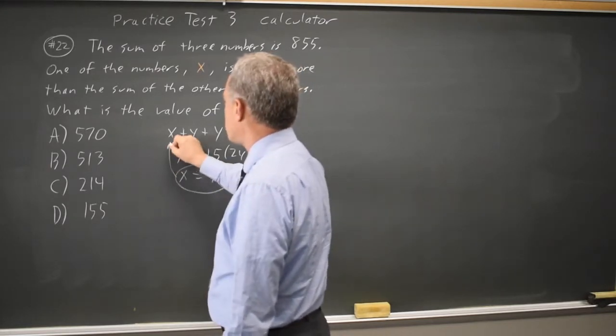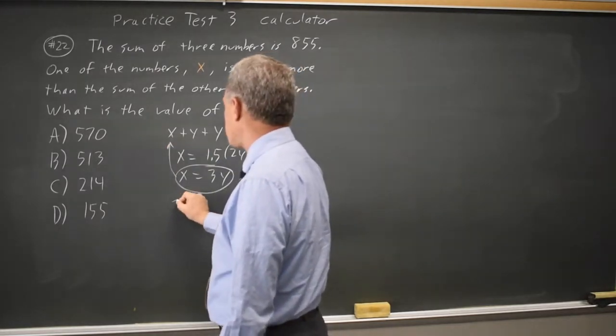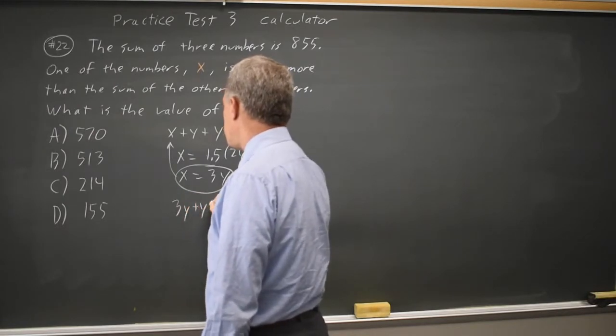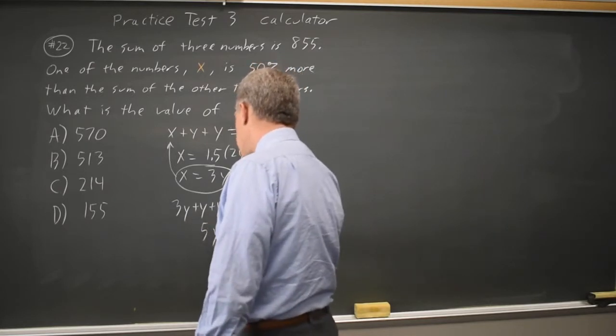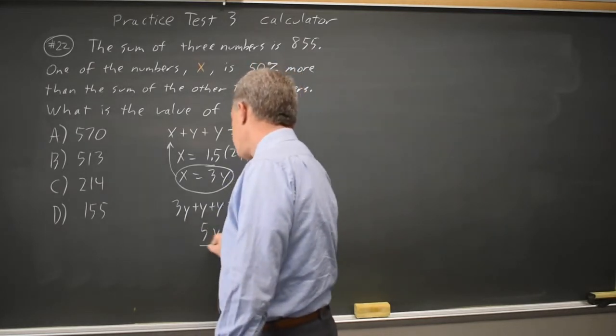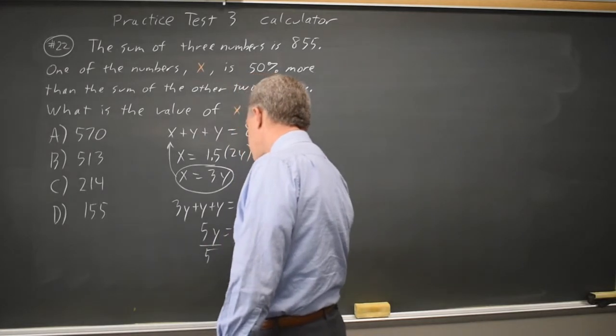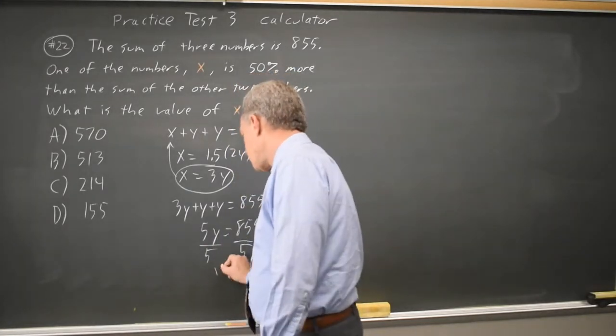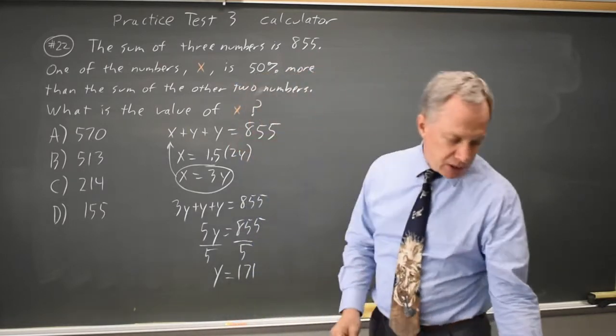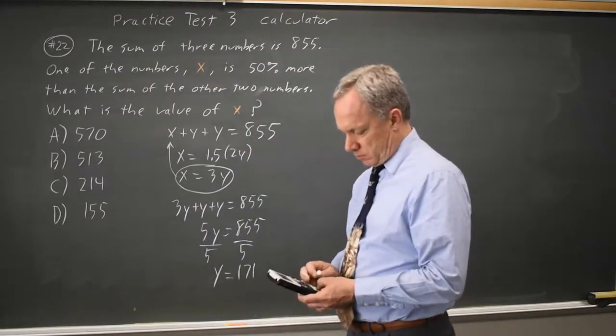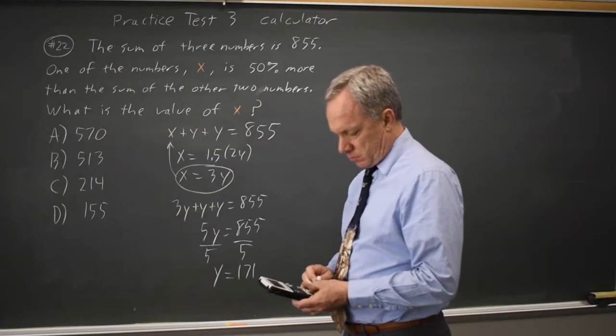Substituting 3y in for x in this first equation I get 3y plus y plus y equals 855. 5y equals 855. If I divide both sides by 5 that gives me y by itself. y equals, I'll check on the calculator, but I think 171. Yes.